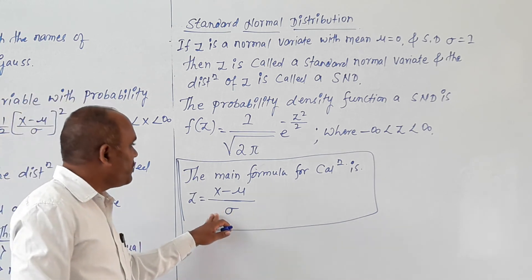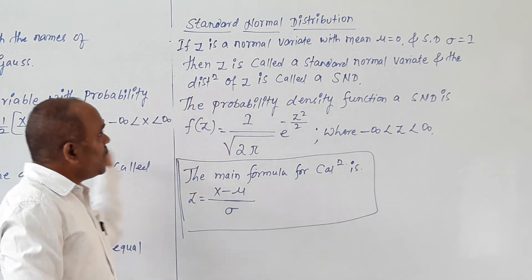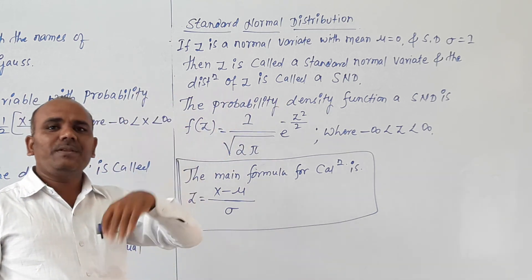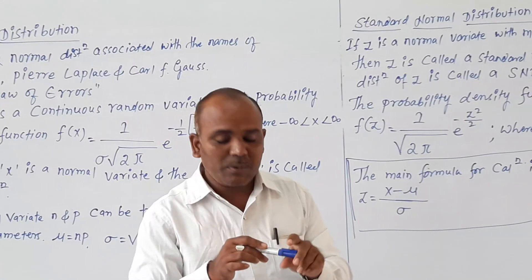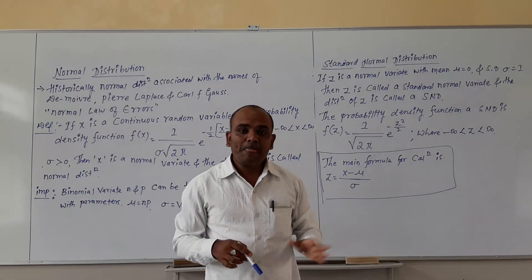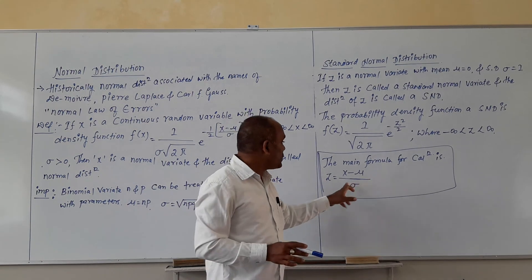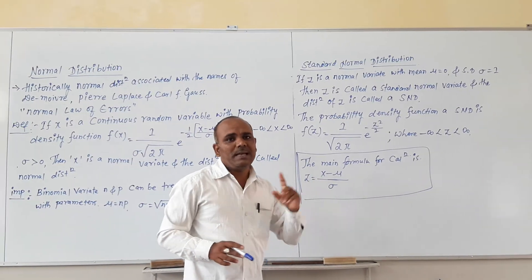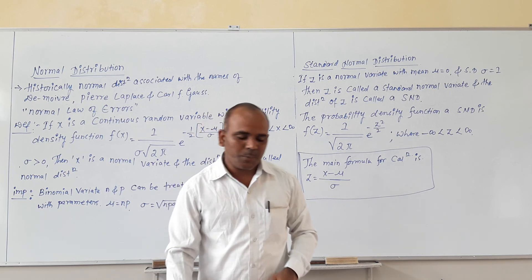This formula z equals x minus mu divided by sigma is very very important for further calculation. These definitions are important if they ask for the definition of Standard Normal distribution or Normal distribution, and the problems are based on this formula. Thank you.